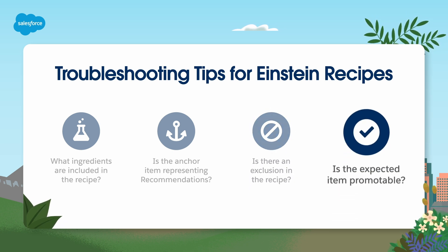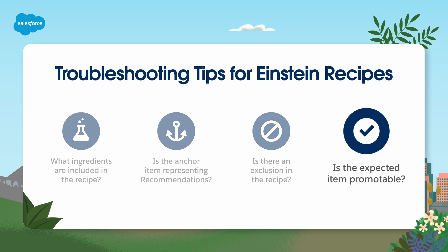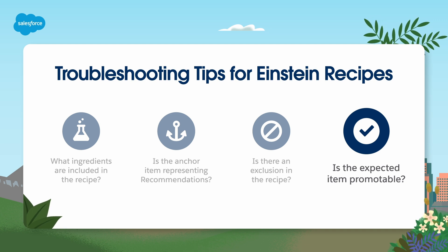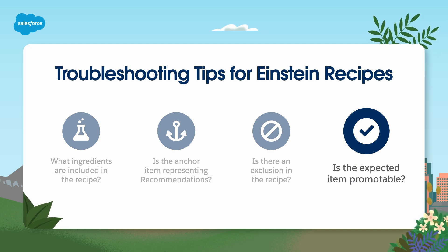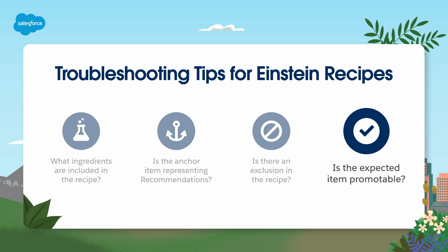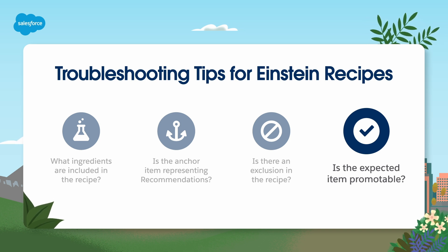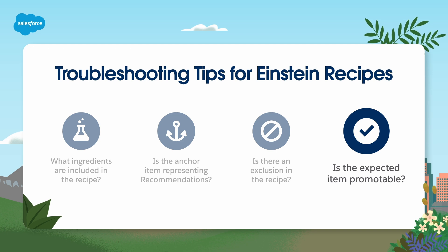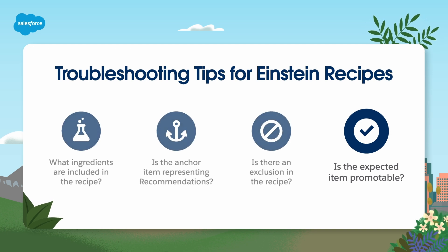Is the expected item promotable? Certain items don't appear as recommendations unless they meet all necessary criteria. For example, if there's a published date, the current date must be after it. If there's an expiration date, the current date must be before it.